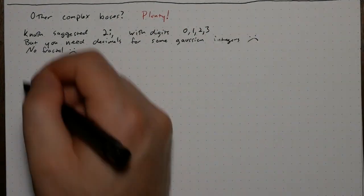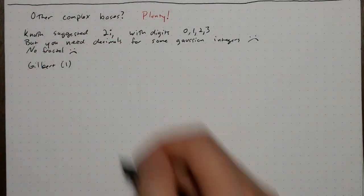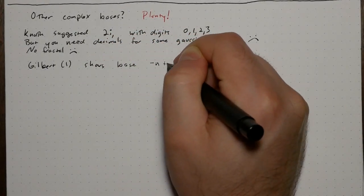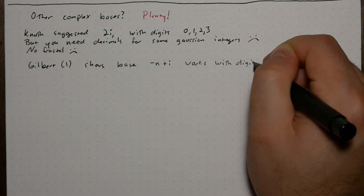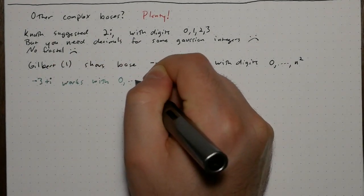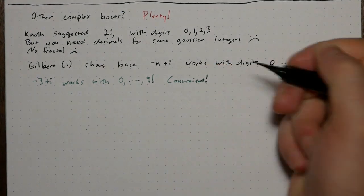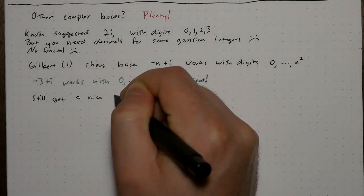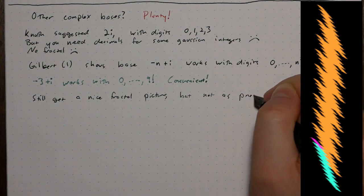The Gilbert paper below shows that the base negative n plus i works with digits 0 through n squared, which means that base negative 3 plus i can be written with just the digits 0 through 9. You even get a fractal, but it's not as pretty to my eyes.